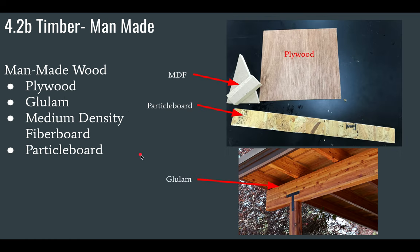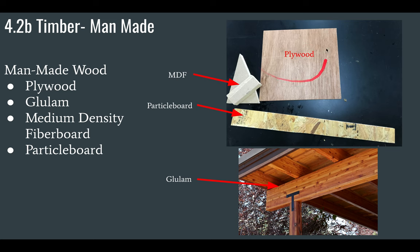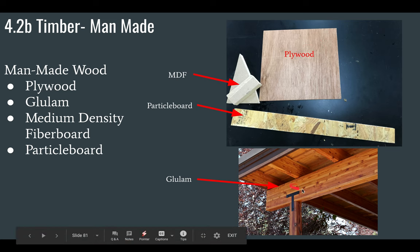Man-made woods include plywood, glulam, medium-density fiberboard (MDF), and particleboard. MDF is medium-density fiberboard. Particleboard has chips of wood glued together. Plywood is constructed of sheets of wood glued together with their grains crossing. Glulam involves taking laminated wood pieces and gluing them together.